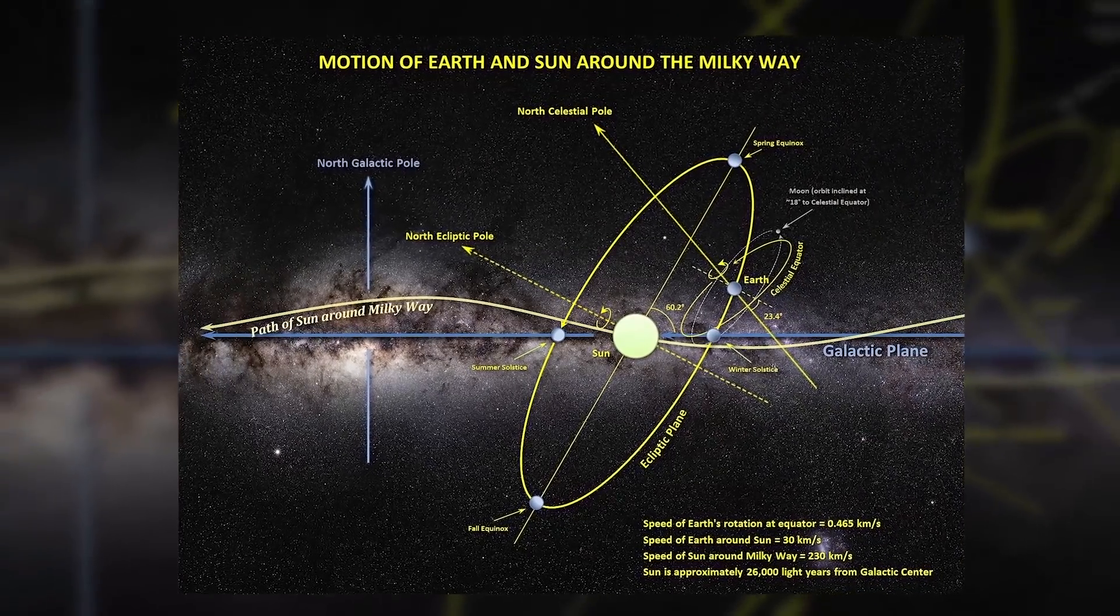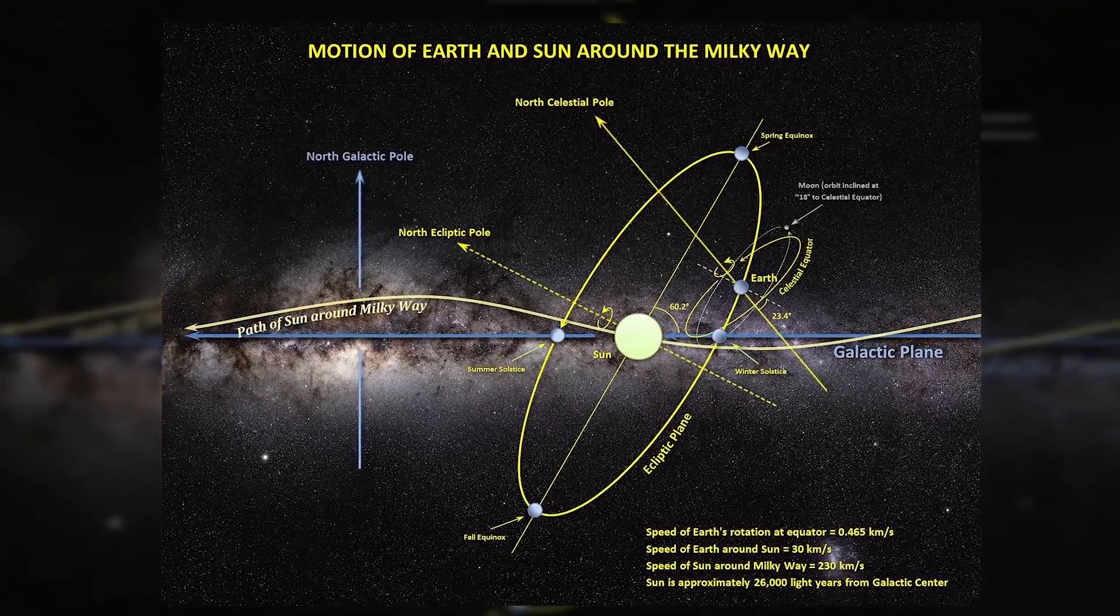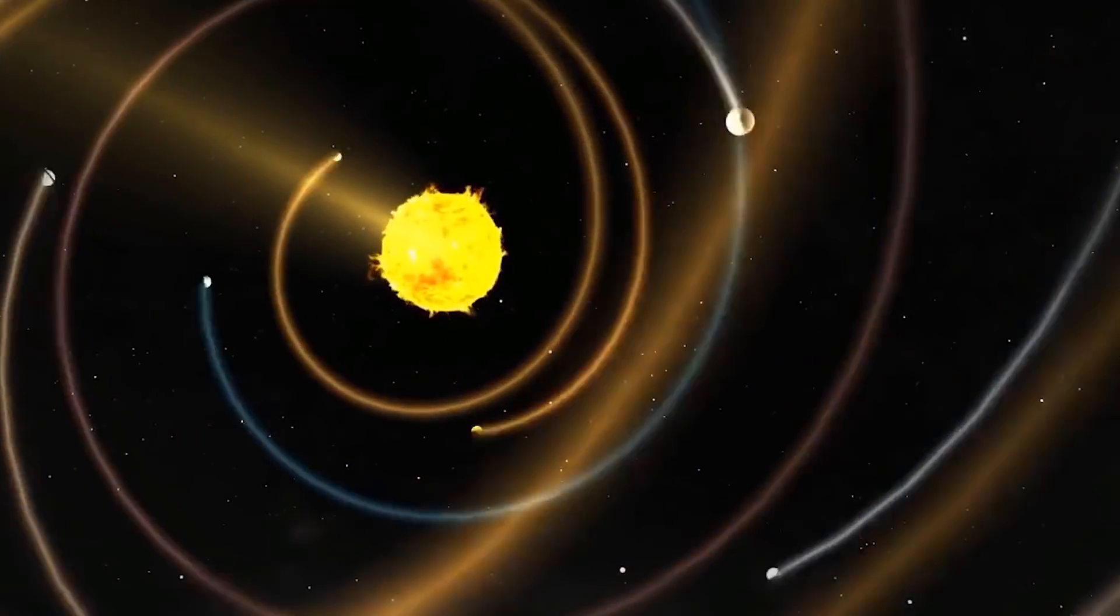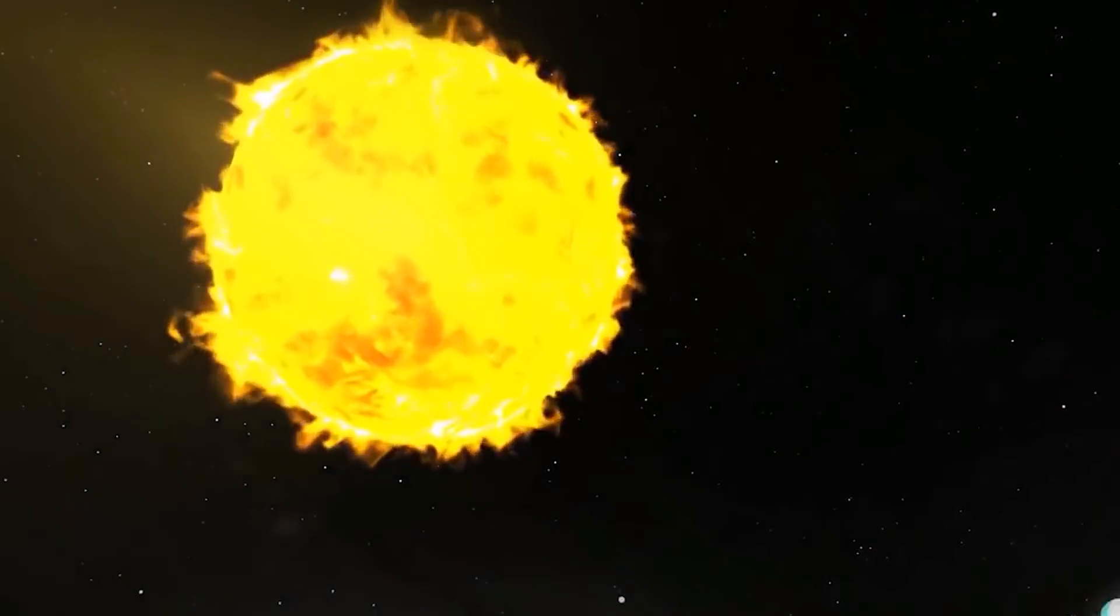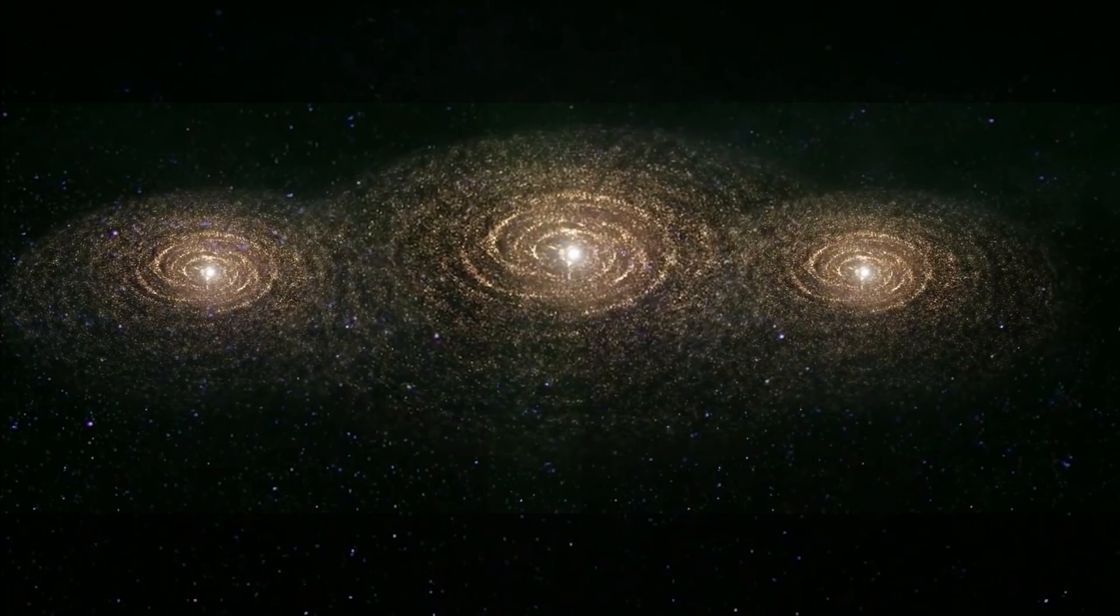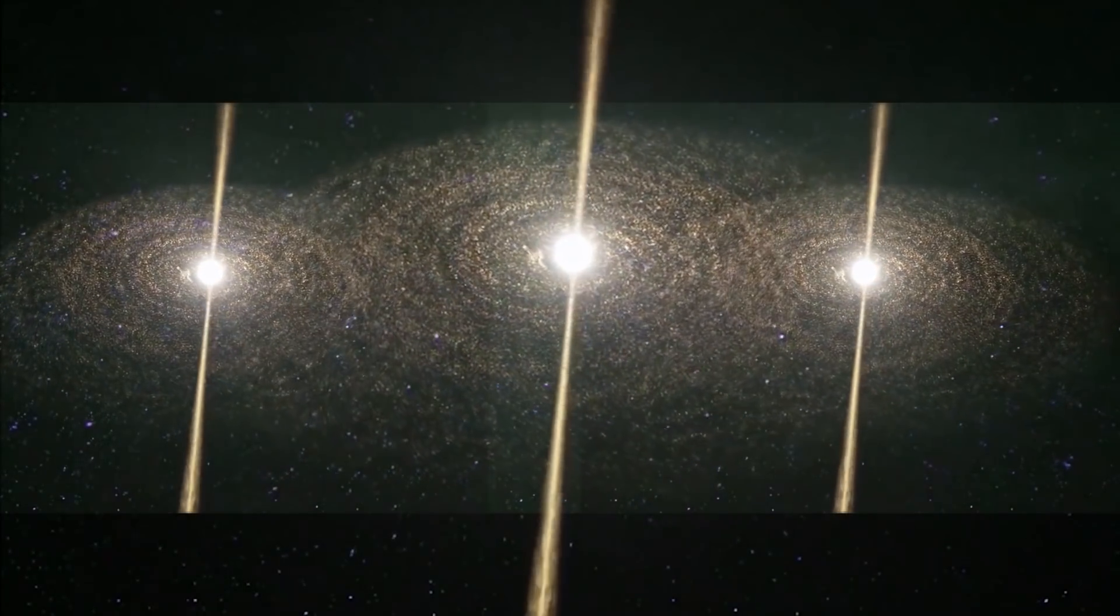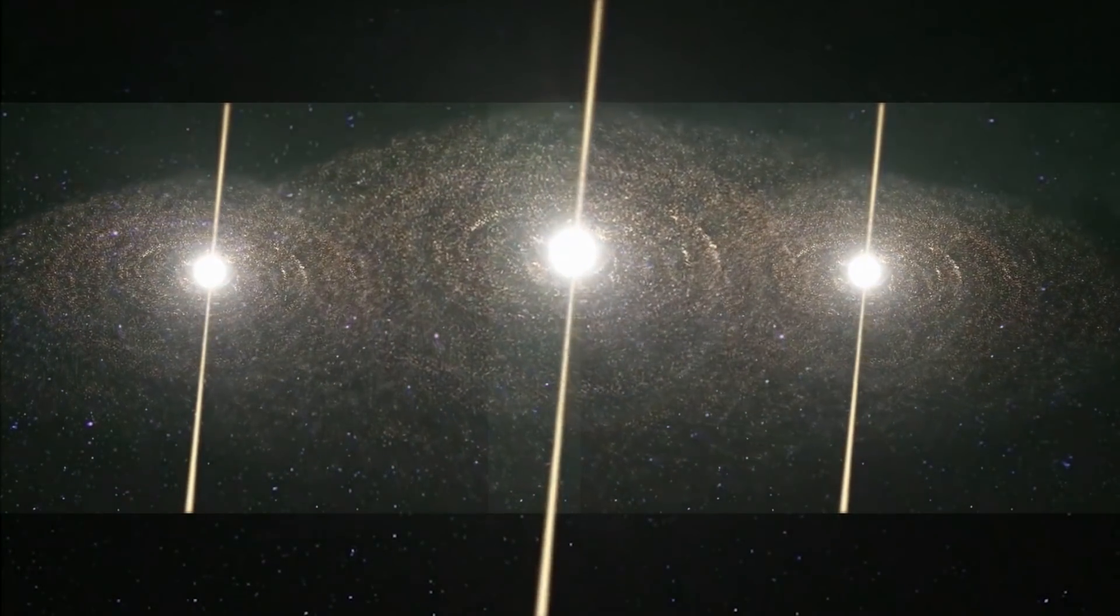When the bubble was forming, our star was very far away. It wasn't until about 5 million years ago that the Sun's journey through the galaxy took it right to the bubble's center. This is a pretty good thing, because the explosion of 15 supernovas that formed the bubble is a great collapse.